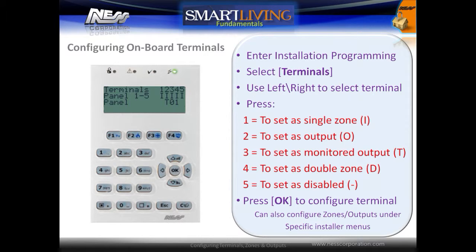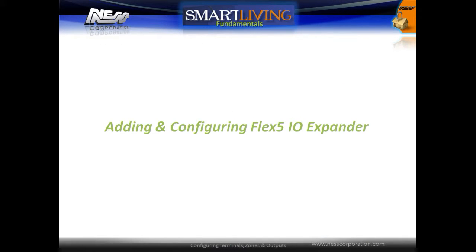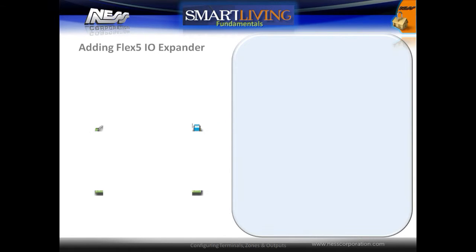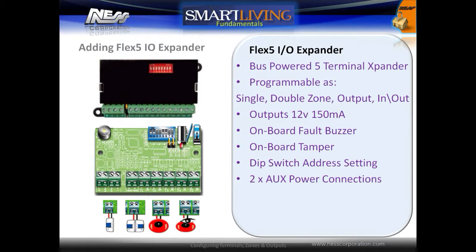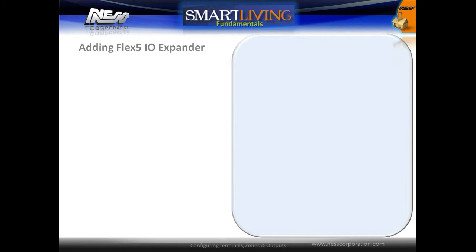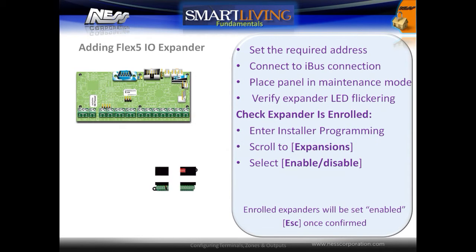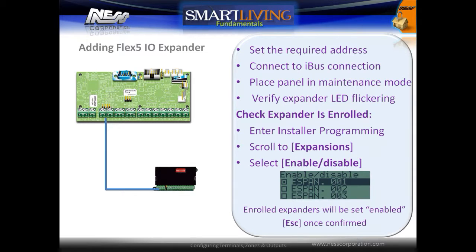The Flex 5 IO expander can be used to add additional terminals to a system. Each of the five terminals can be configured as a single or double input, output, or monitored output. To add a Flex 5 expander to the system, set the required address, connect it to the I-Bus, place the panel in maintenance mode, and then verify that the expander's LED is flashing. The system will automatically enroll any Flex 5 module attached if the system is in maintenance mode.